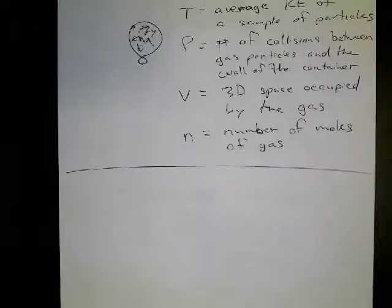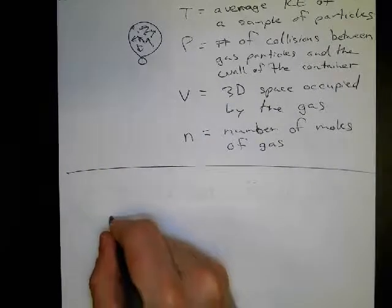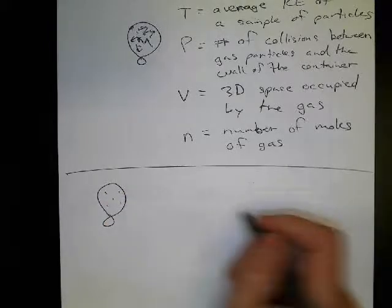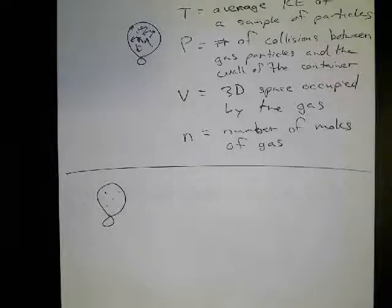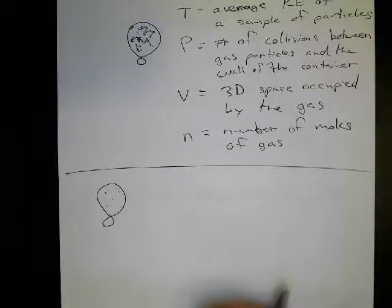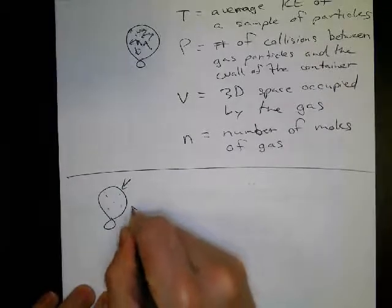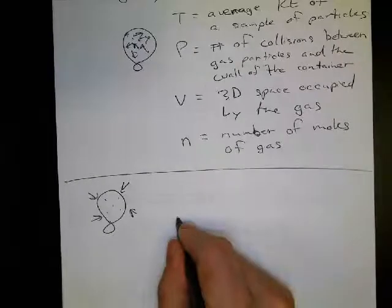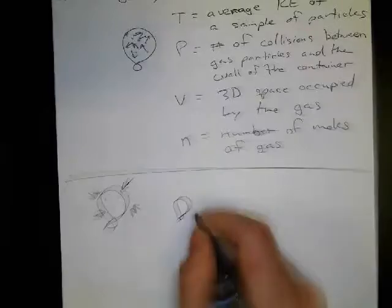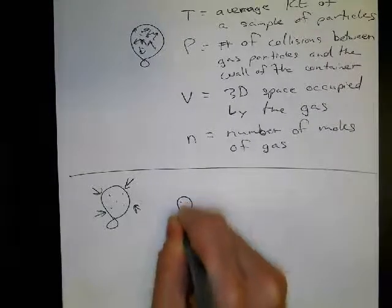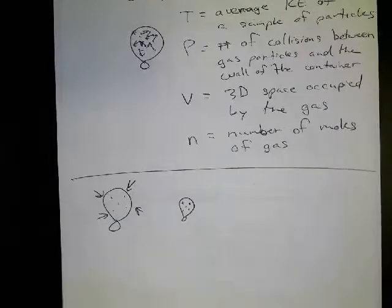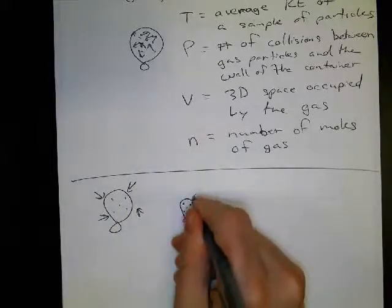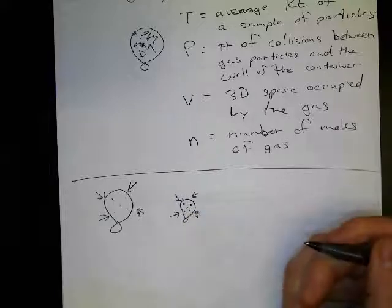First experiment: we seal the balloon off with five gas particles inside, at a certain temperature and pressure. What we do is apply a large pressure to the outside of that balloon. We see that the balloon will actually shrink to a smaller size, but it'll still have those five particles inside. So that pressure squeezes the balloon down to this size. Why does it do that?